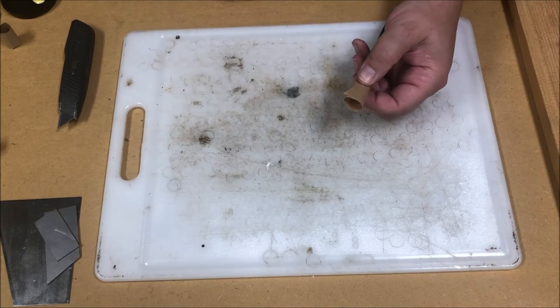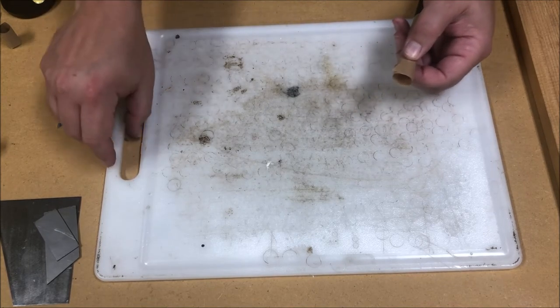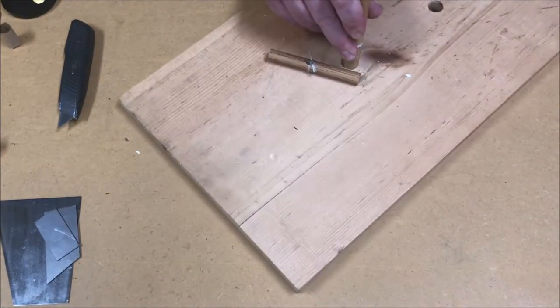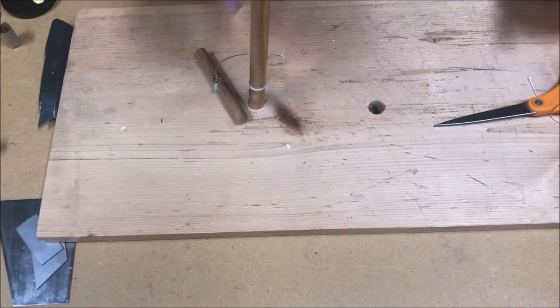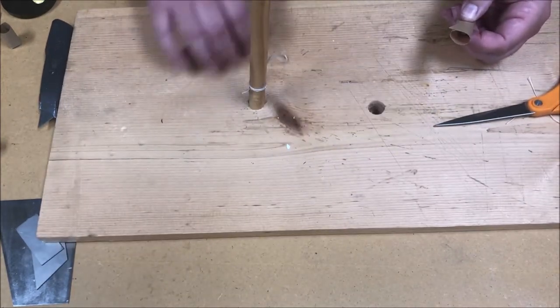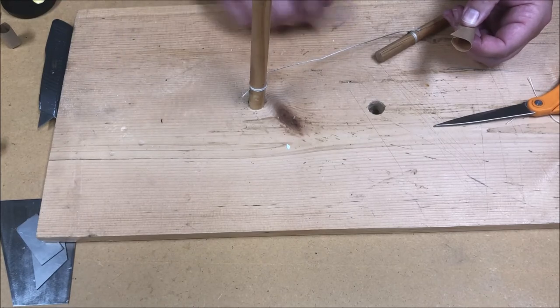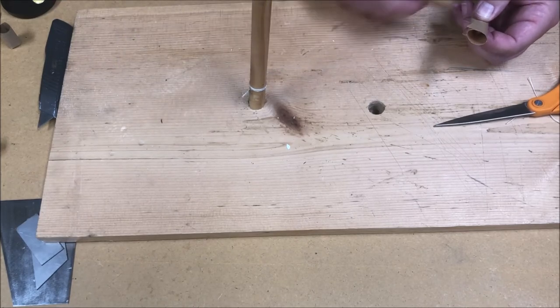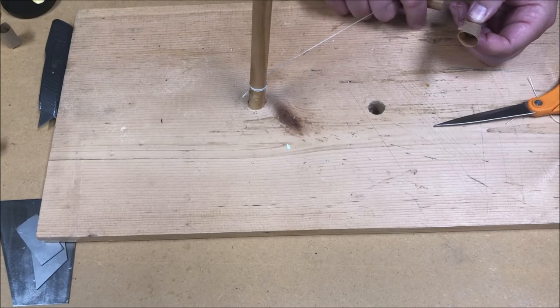The next step is to choke and tie the nose end of the cartridge. So to do that, I've created a little choking table here. It's just a scrap piece of wood with a dowel secured in it, and some string and another dowel to make a choking cord.